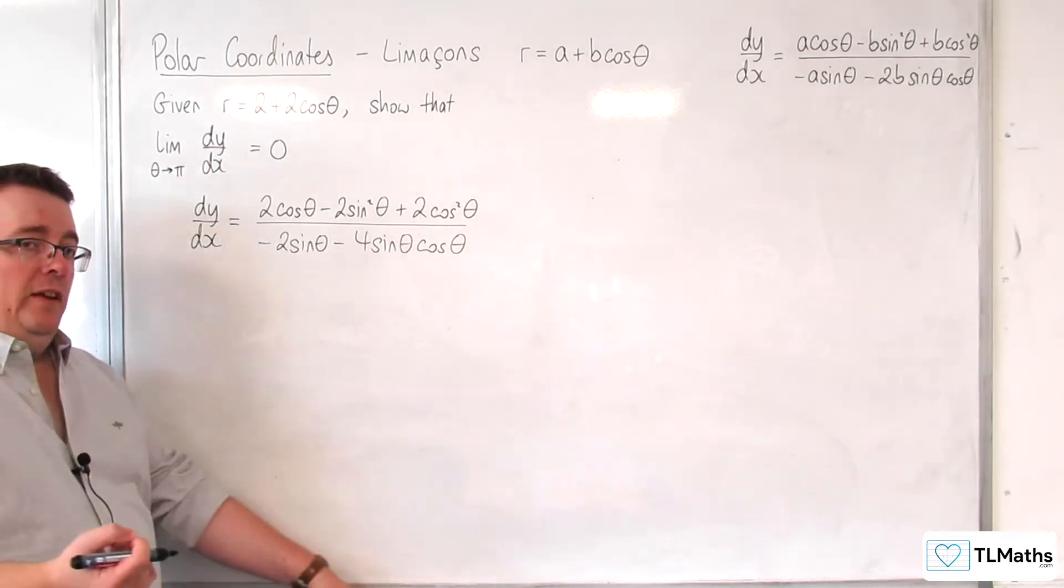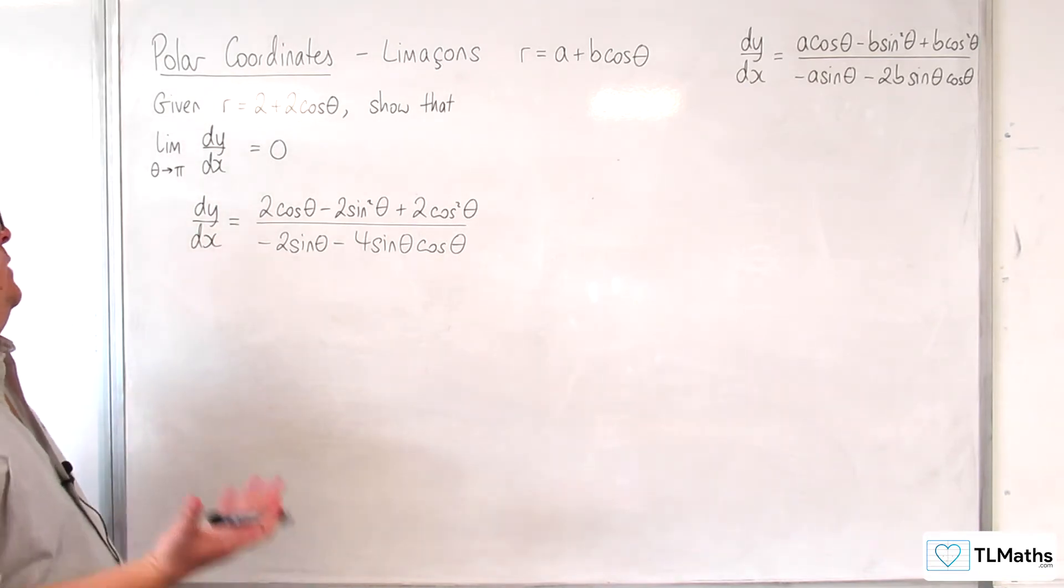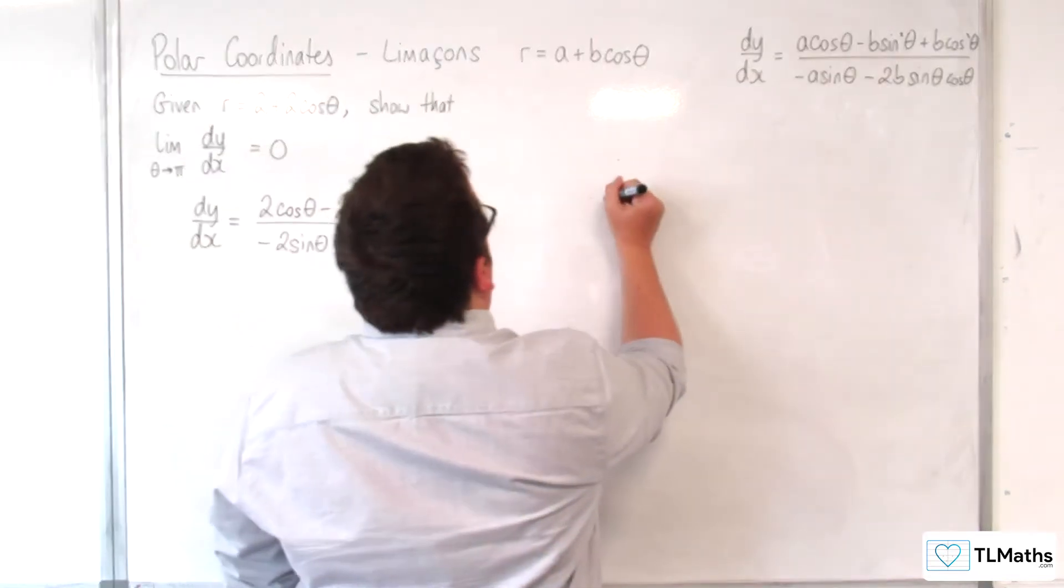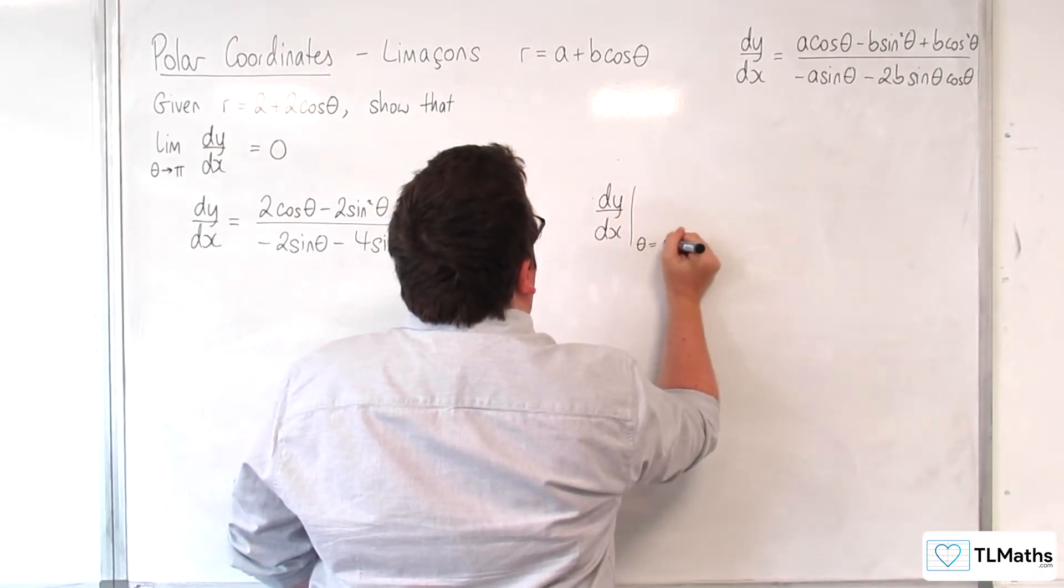So first thing I'm going to do is I'm going to try substituting in theta equals pi. So dy by dx when theta equals pi.